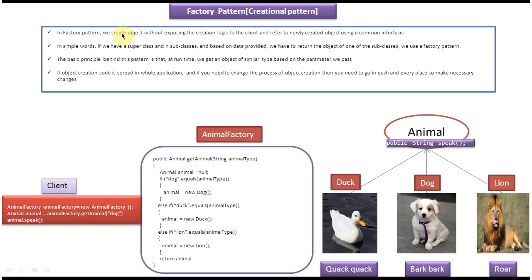The second sentence: in simple words, if you have a super class and n subclasses, and based on the data provided, we have to return the object of one of the subclasses. In this case, super class is animal and duck, dog and lion are the subclasses. And based on the animal type you passed, this method is returning one of the subclass objects. The third sentence: the basic principle behind this pattern is that at runtime, we get an object of similar type based on the parameter we pass. We are passing the animal type, and based on that parameter it will return the object of similar kind — duck, dog and lion are all of the animal category, so it is a similar type.